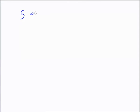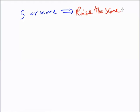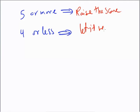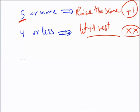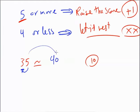Now we have an easy lesson called approximation. Five or more, raise the score. Four or less, let it rest. So five or more: add one. Four or less: don't add anything. For example: 35 approximated to the nearest ten. Look at the tens place — that's 3. Before it is 5, and five gives, so 3 becomes 4. The answer is 40, changing the remaining digits to zeros.